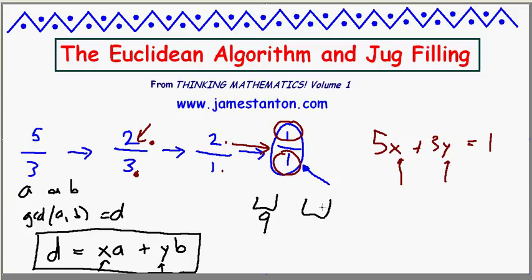So actually, his method allows you to solve any type of jug filling problem. If I was looking to solve the problem with a 9-gallon jug and a 16-gallon jug, their greatest common divisor is one. Yes, his method will give me a means to obtain one gallon of water from those two jugs.